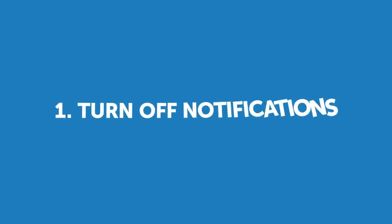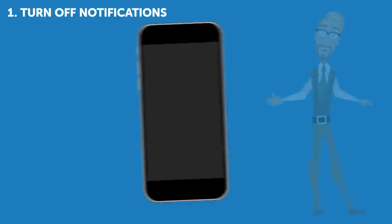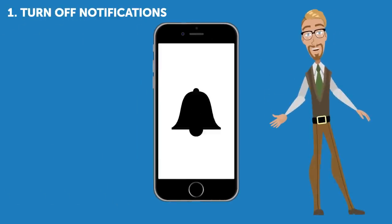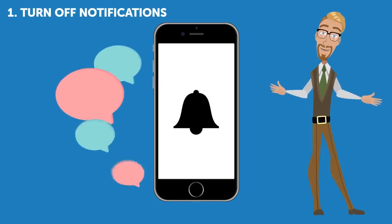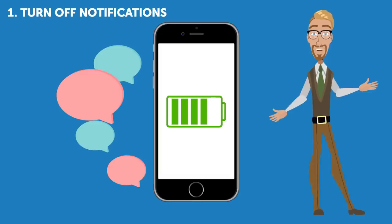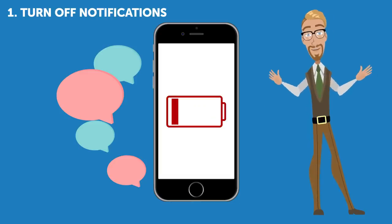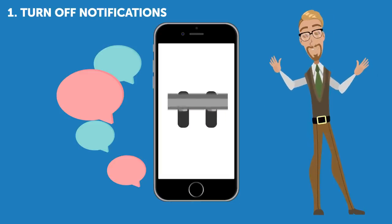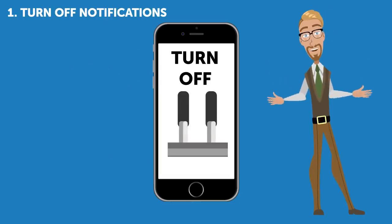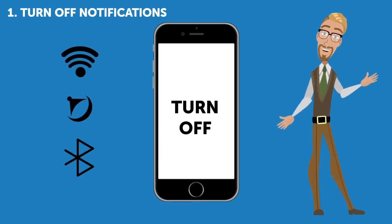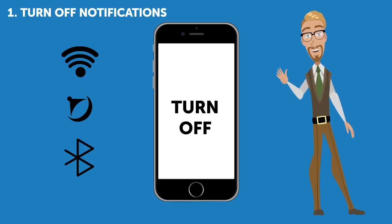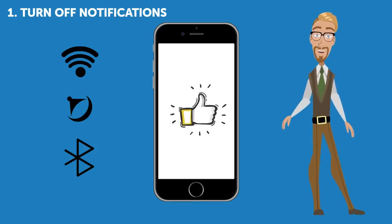1. Turn Off Notifications. Pretty much all mobile apps send you push notifications. On the one hand, this is convenient because you don't miss any important information, but taking advantage of this function eats up a lot of your phone's energy and kills the battery. You can turn off notifications from apps you rarely use. Keeping Bluetooth, Wi-Fi, infrared capabilities and GPS switched off until you need to use them does a lot for your battery life as well.